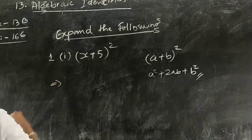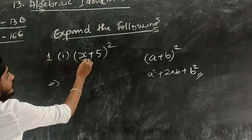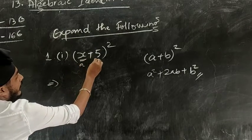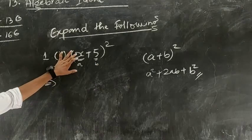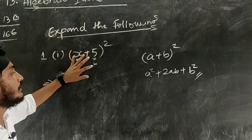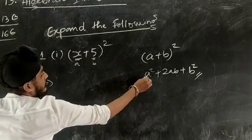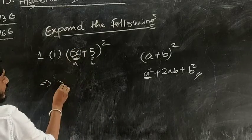What is the question? (x+5)². So this will be your a and this will be your b. Clear, friends? This is x, we'll assume this as a, and this is 5, we'll assume this as b. So what is the first expression here? a². So a² means here x².